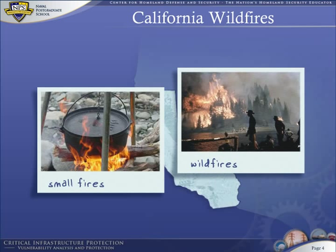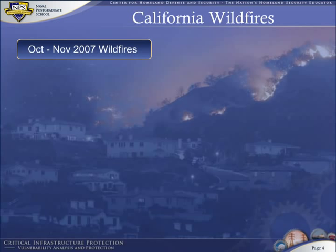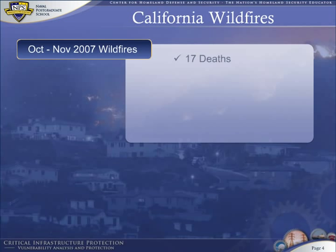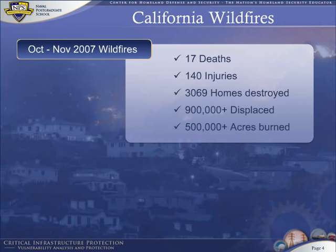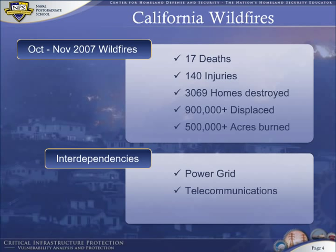The October 2007 wildfires were no exception. During the period spanning late October and early November, 17 Californians lost their lives and 140 were injured due to a massive set of fires across the lower half of the state. Three thousand homes were destroyed before the flames were brought under control. The October 2007 wildfires displaced nearly one million people, burned over half a million acres, and destroyed or disabled portions of the power grid and the telephone system.